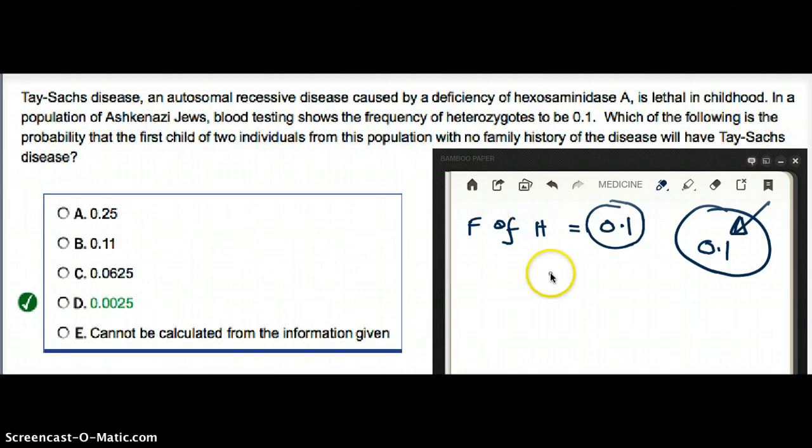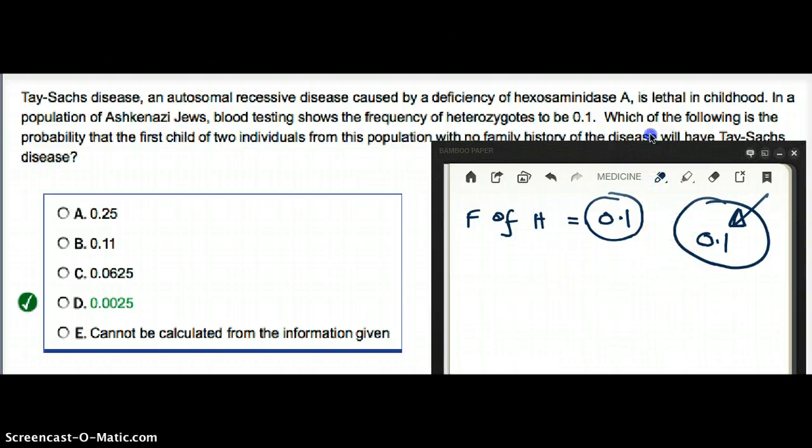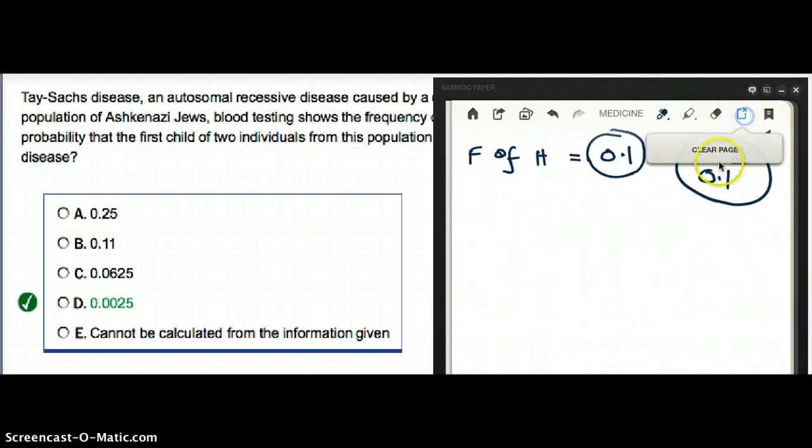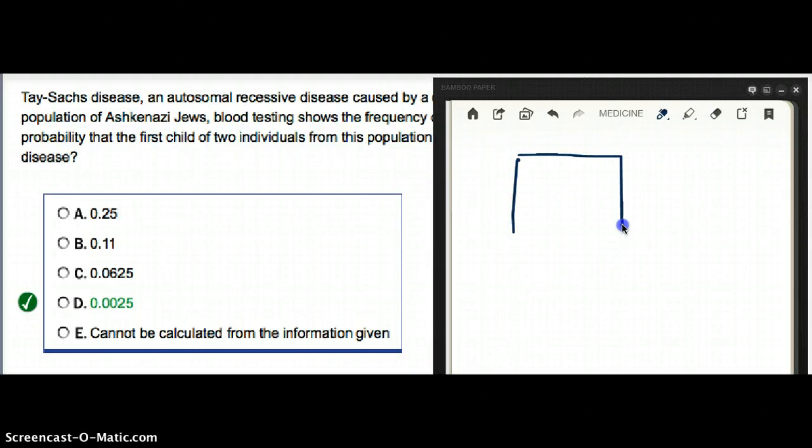What are the chances of having a homozygous Tay-Sachs child? If there are two parents who are heterozygotes, it's going to be one-fourth.